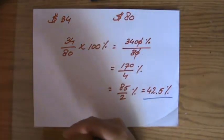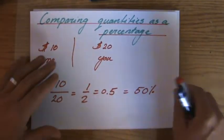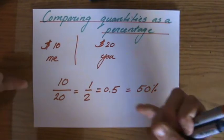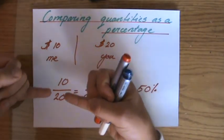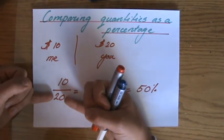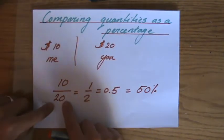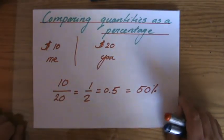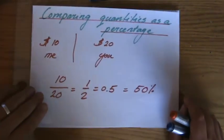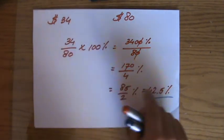So just to summarize it, comparing quantities as a percentage to each other, you do one quantity over the other quantity. If I'm comparing myself to you, I do myself over you, and I times that by 100% to get a percentage, because we don't want fractions and decimals anymore. We want a percentage.